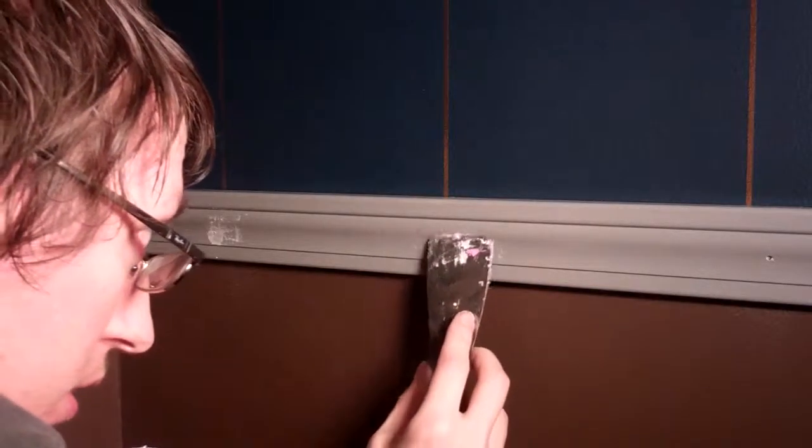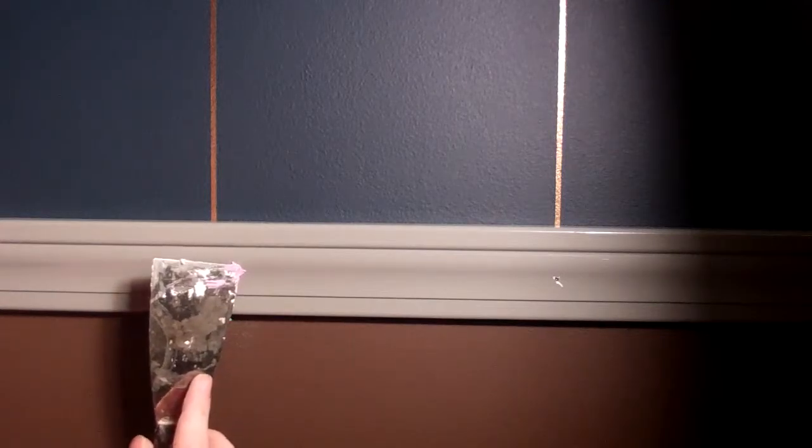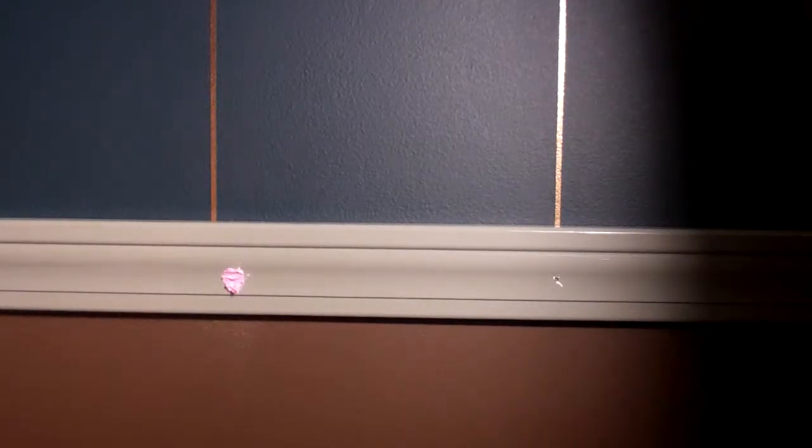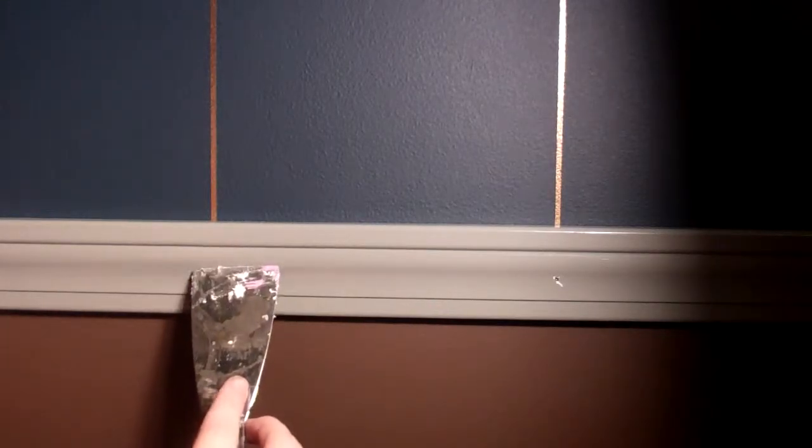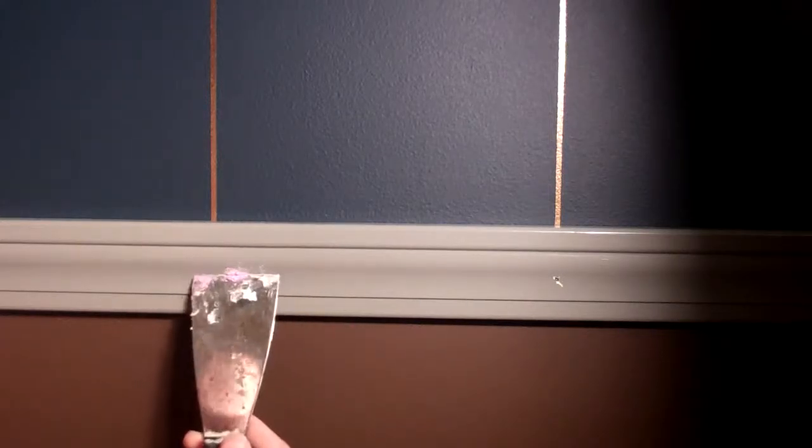Then that was taped off and we painted over it with the blue. After the blue was on we put the brown on, then we took the tape off to reveal the bronze underneath and put the chair rail up.